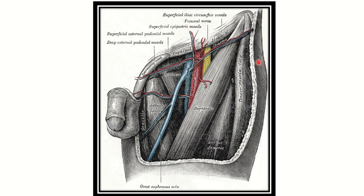Looking at the picture, we can see the femoral triangle. It extends from the upper to the lower boundary. The medial border is formed by the adductor longus, the lateral border by the sartorius, the base or upper part by the inguinal ligament, and the apex or lower part by the junction of the sartorius and adductor longus muscles.